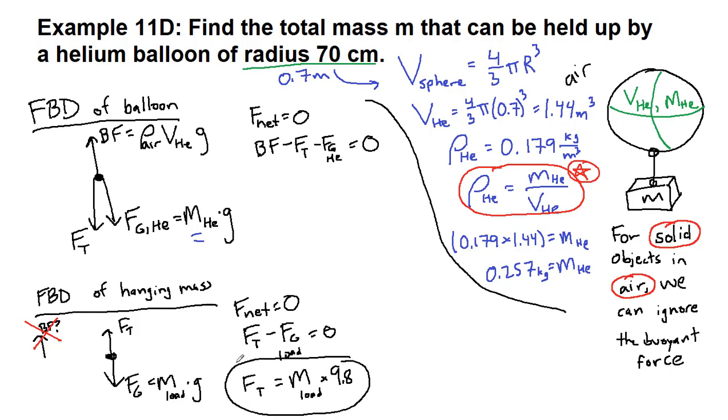We're going to be using that up here because we don't know what the tension is and we don't want to have too many unknowns. Okay, so let's deal with the buoyant force. The buoyant force is the density of air. Since we've already used the density of helium at 0 degrees Celsius, we'll go ahead and use the density of air at 0 degrees Celsius. 1.29.